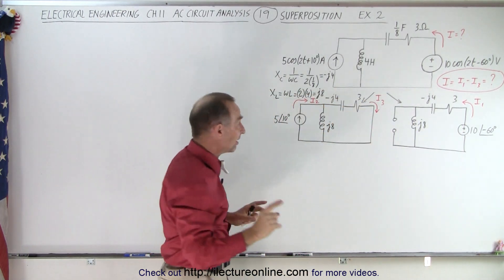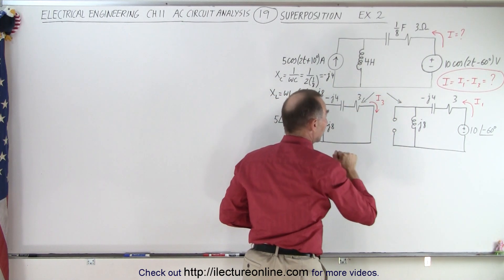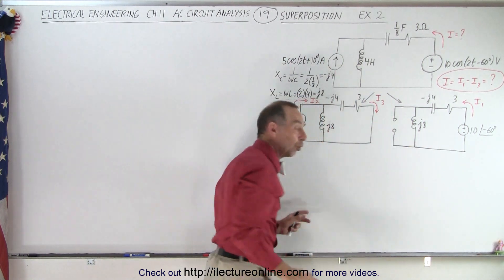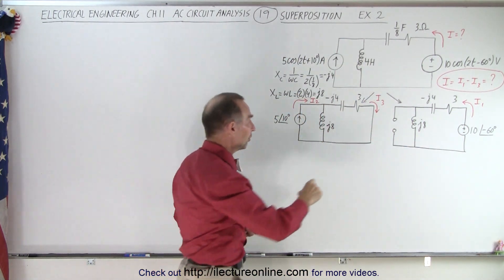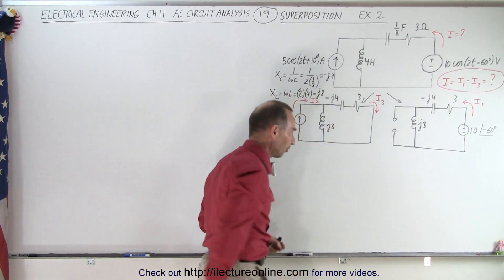Everything is the same except in this circuit we've eliminated the voltage source, made it into a short circuit, and in this circuit we've eliminated the current source and made that an open circuit. When we remove the current source it becomes an open circuit, when we remove the voltage source it becomes a short circuit.